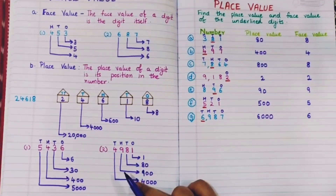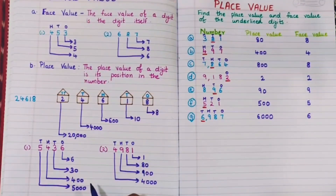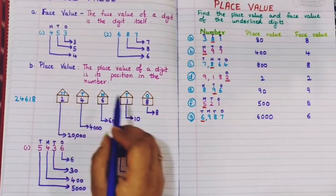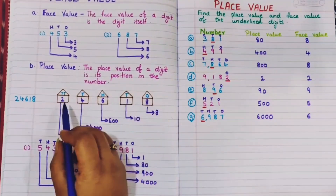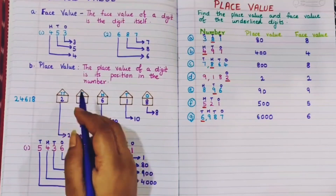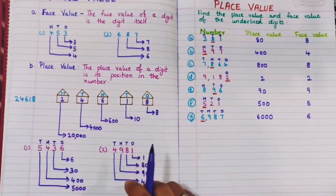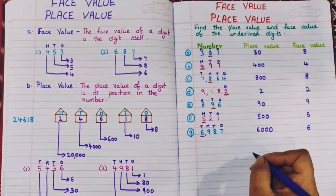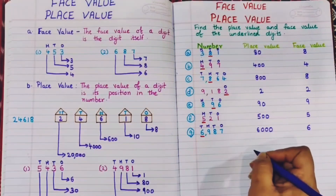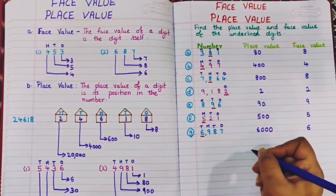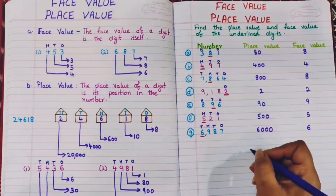To remember place value: give the positioning or houses to the digits. Once you assign the houses, the place value becomes very easy. I hope this video is clear to you. If you enjoyed this video, do give it a like, share this video, and subscribe to our channel.